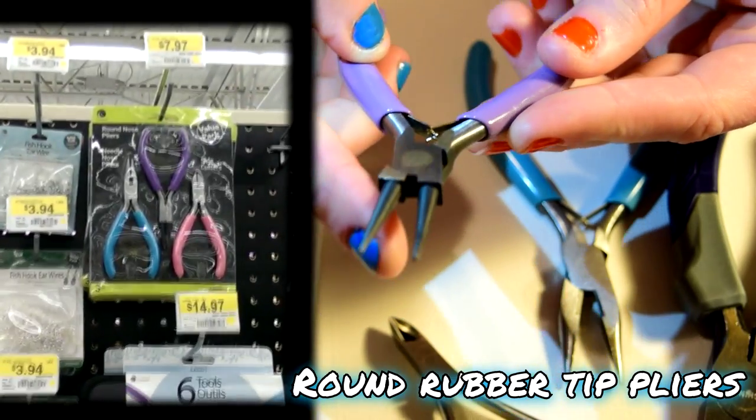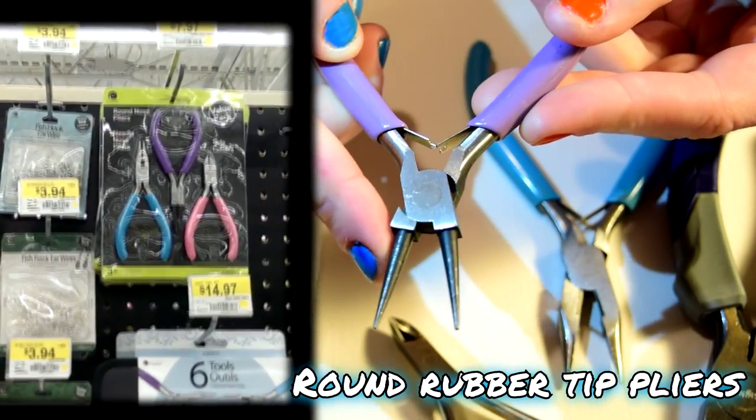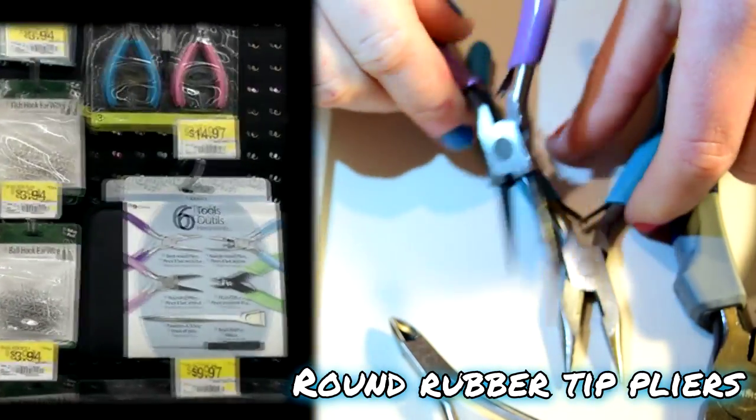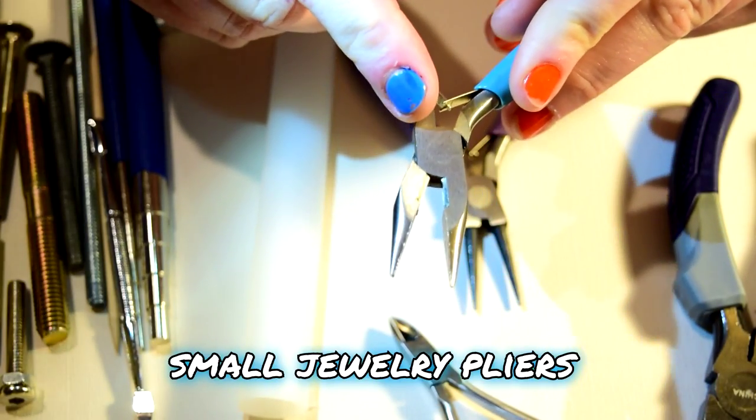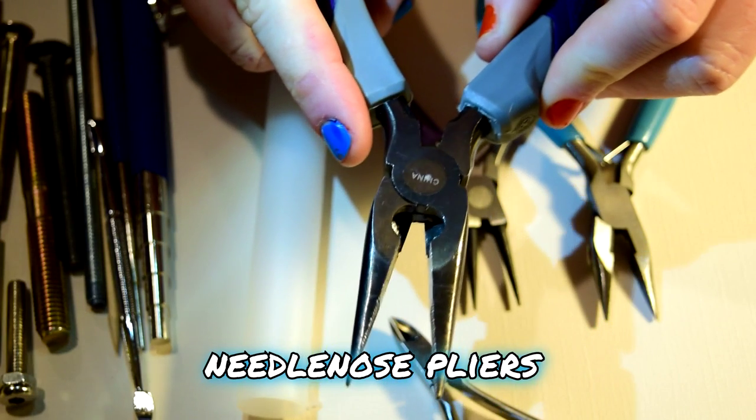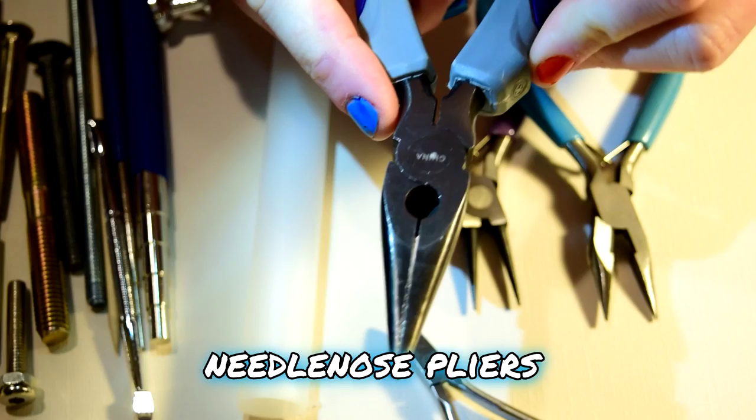Round rubber tip pliers. These are less scratchy on the metal. They can be used to further shape round and cone pieces. I got those tools in a little set in the jewelry making section at Walmart. I also have the heavy duty needle nose pliers.